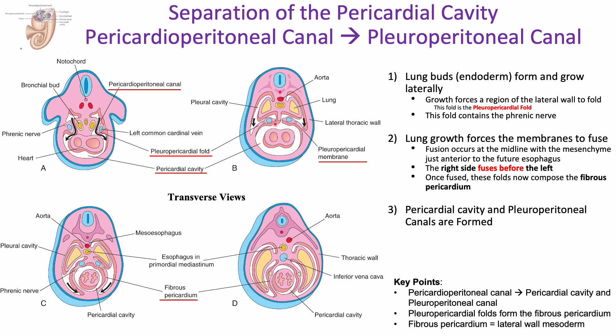The pleuropericardial folds are forming first, being forced into this orientation due to the developing lung buds. As the lung develops, these folds are continually forced to the midline and eventually fuse with the component of the mesenchyme anterior to the future esophagus. There's also a nerve incorporated into this structure — the phrenic nerve, arising from the lateral wall and being pushed over. As the pleuropericardial folds fuse, they get thinner and thinner, becoming pleuropericardial membranes, which eventually form the fibrous pericardium — the adult derivative surrounding the heart — completely separating the heart from the pleuroperitoneal canal.